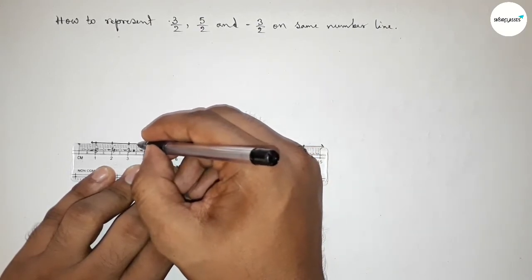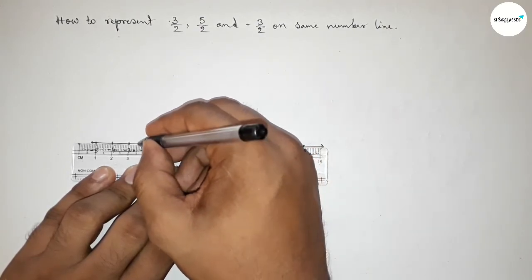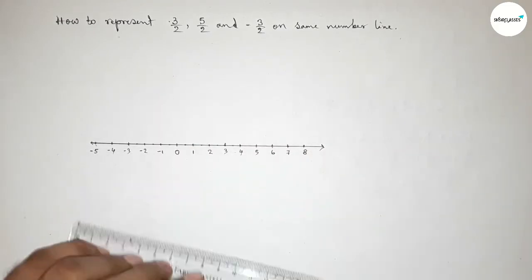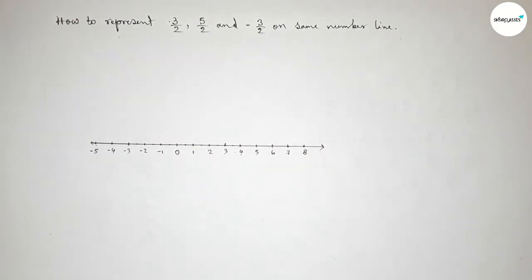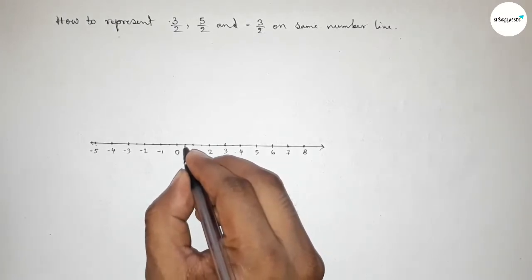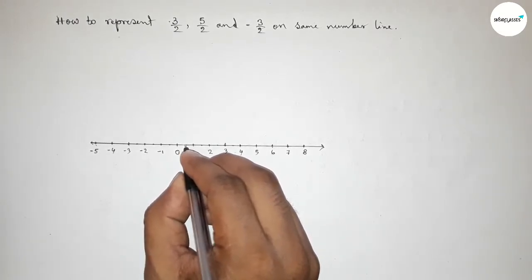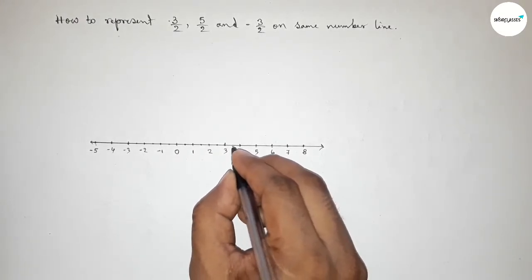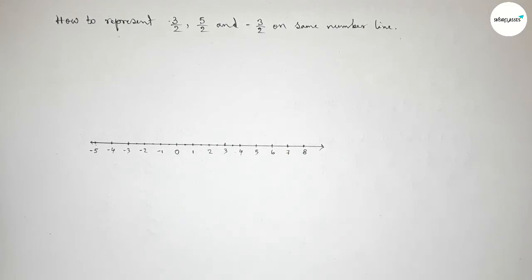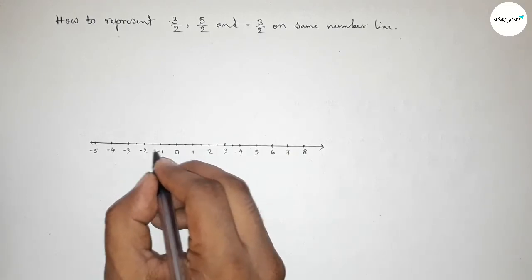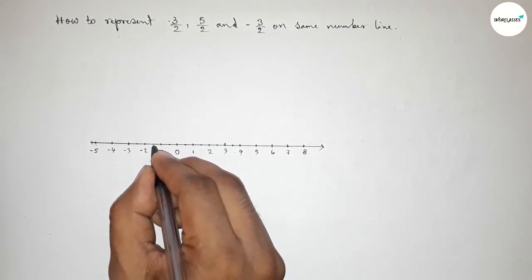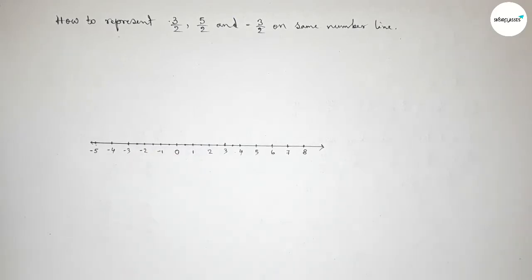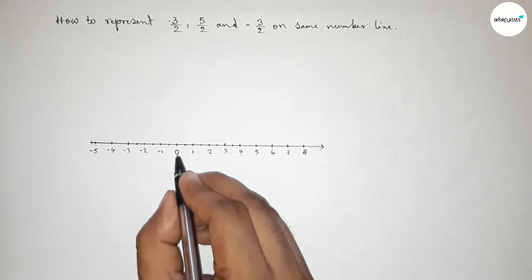Similarly, this is the half between zero to minus one, and this is the half between minus one to minus two. Now deeply marking the half of each length — this is the half and this is also the half.